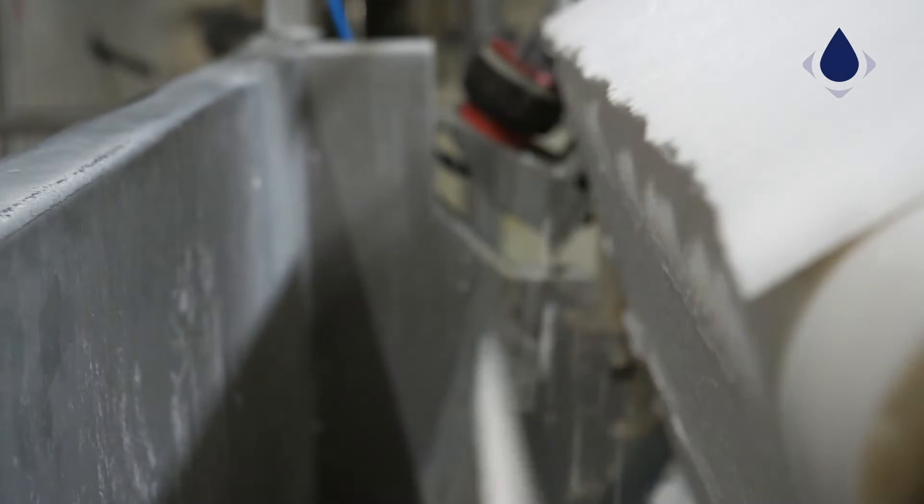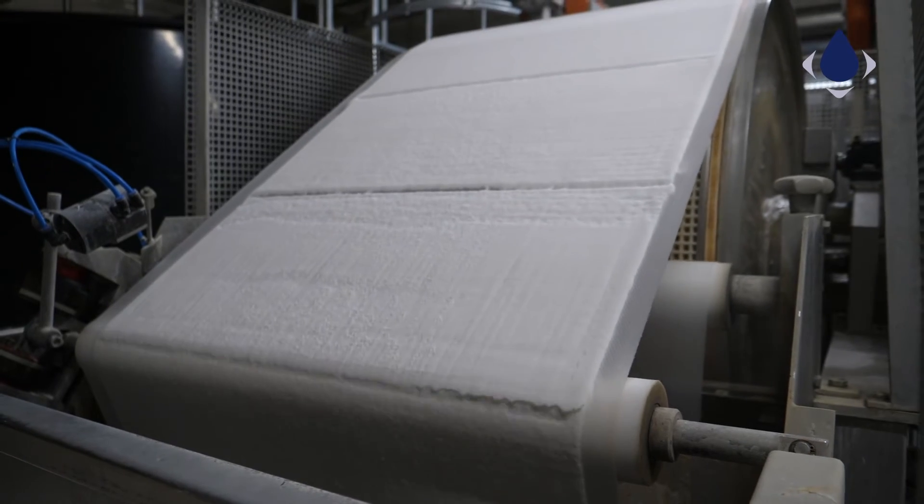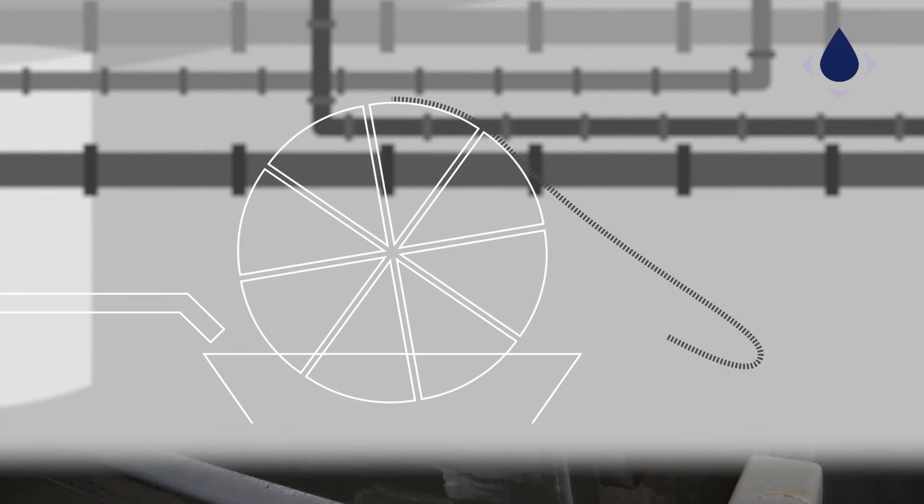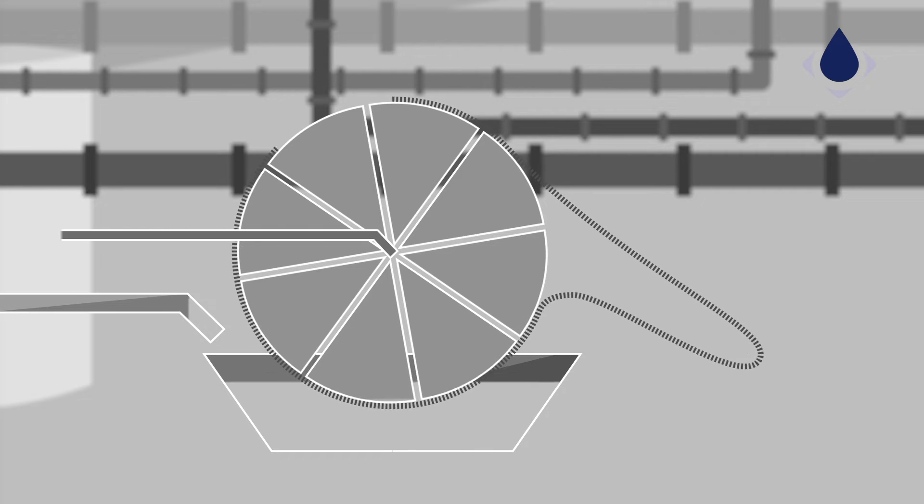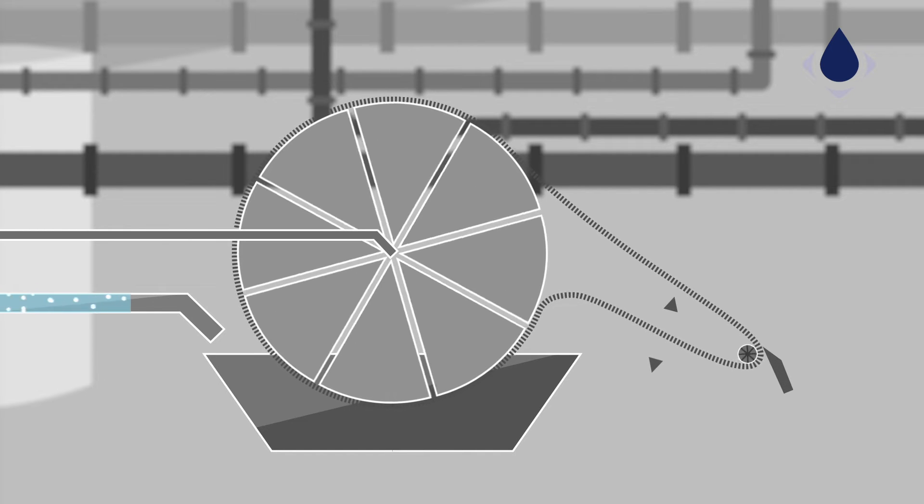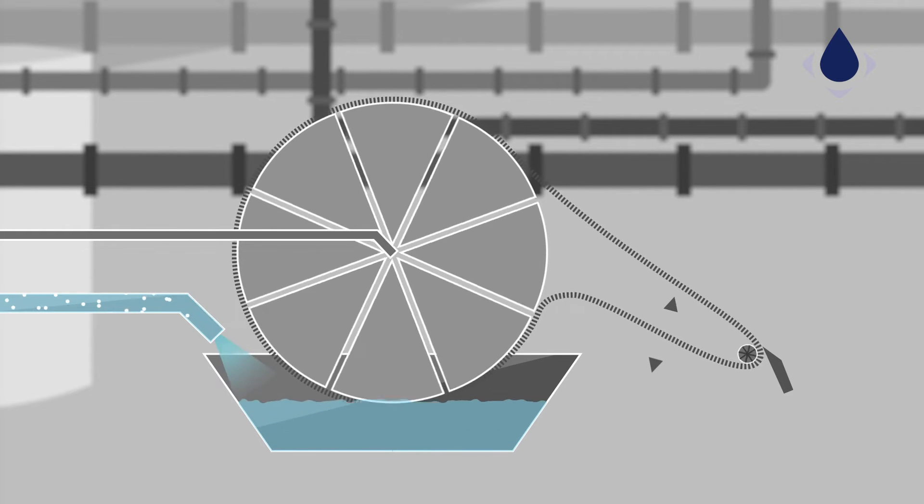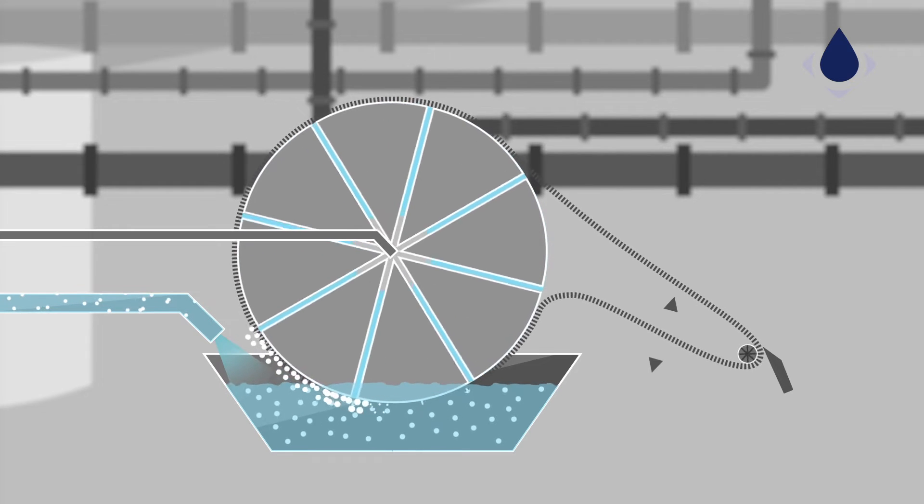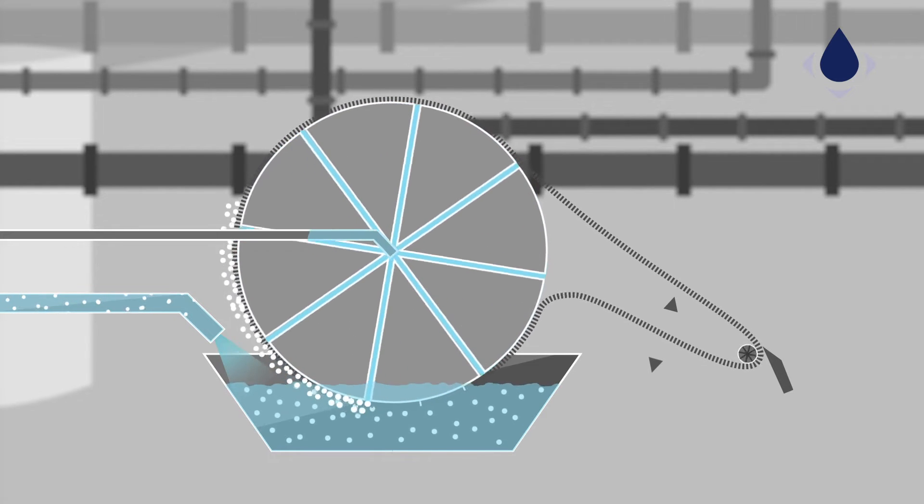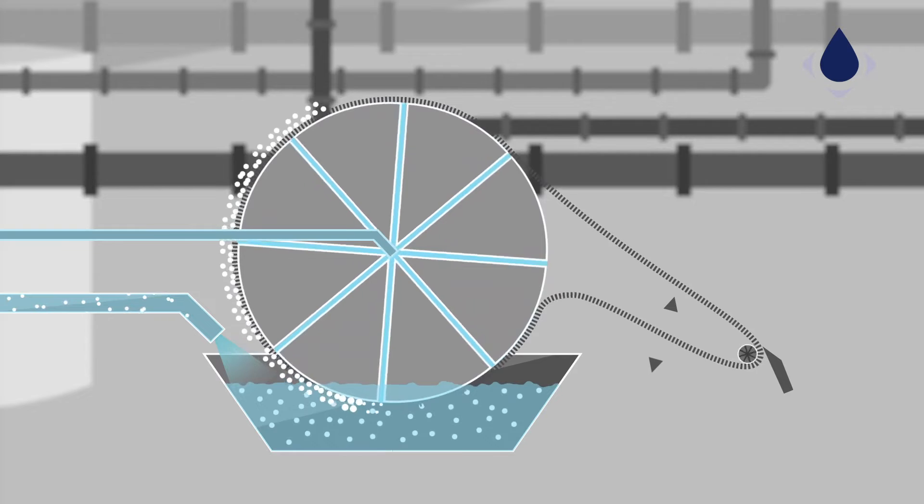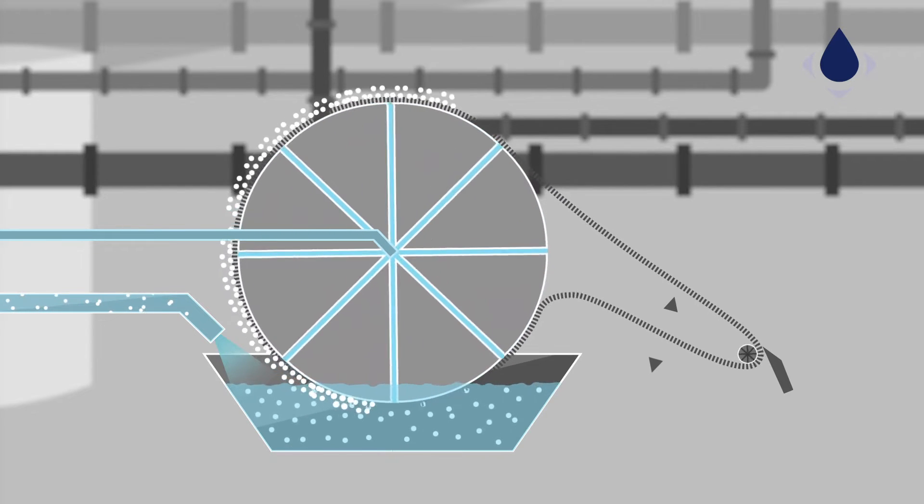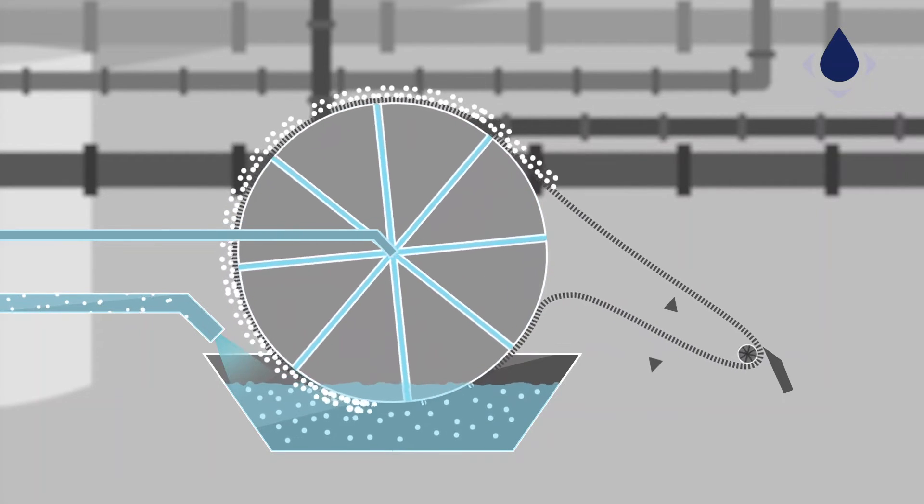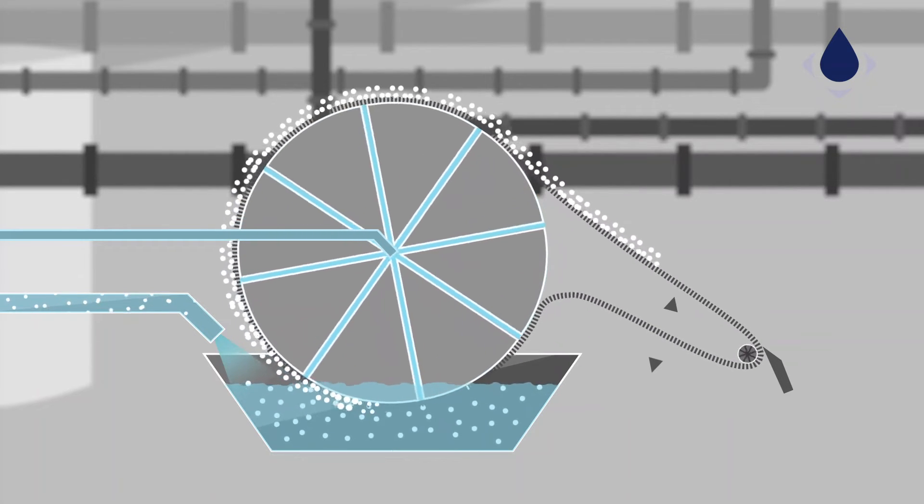As a second option, the starch can be de-watered by a vacuum filter. Starch slurry from the hydrocyclones enters the slurry tank of the rotating vacuum filter. By applying vacuum to the perforated filter drum, the starch slurry is sucked onto the drum. Only water and air pass through the filter belt around the drum surface, depositing the solid starch on the filter belt.